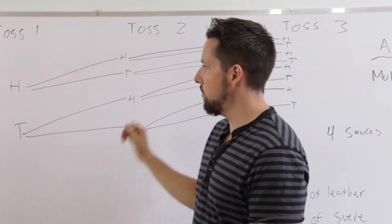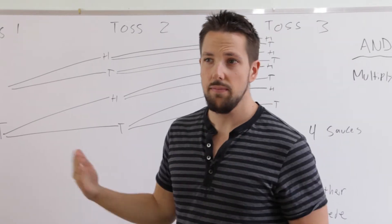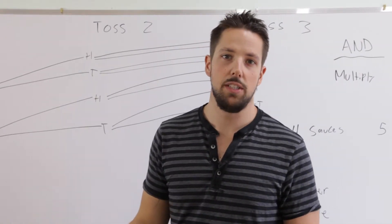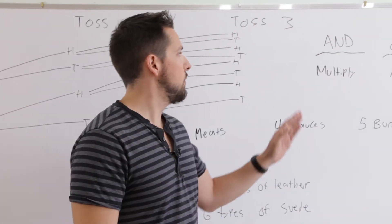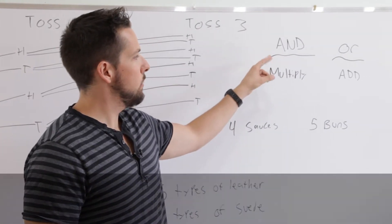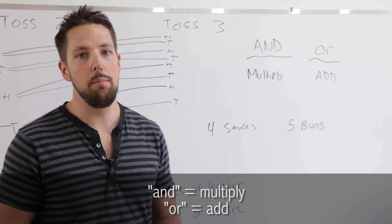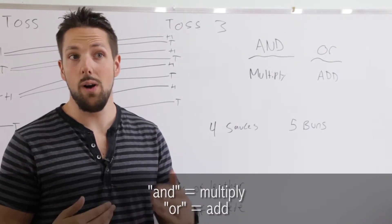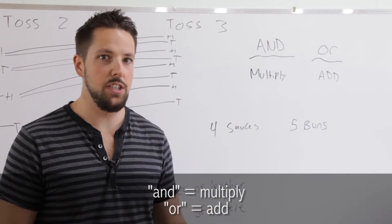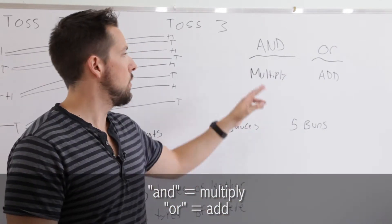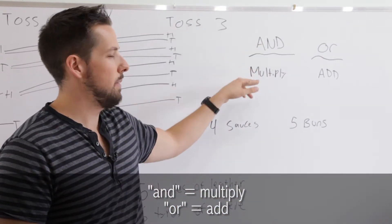But there's easier ways. You don't want to have to draw this diagram every time you want to calculate the number of options something has. So we can do two rules, the and rule or the or rule. So the and rule means that when you're doing a multi-stage event and the stages you're doing one stage and another stage and another stage, you multiply. So and means multiply.